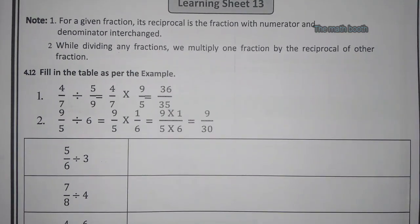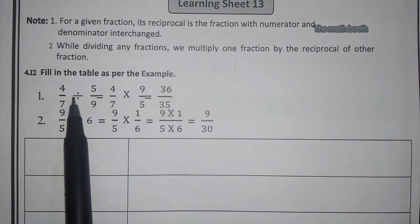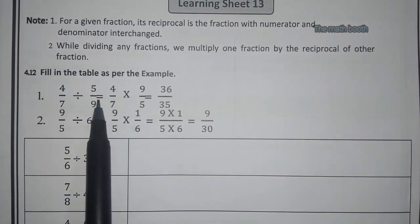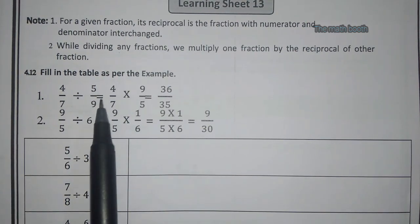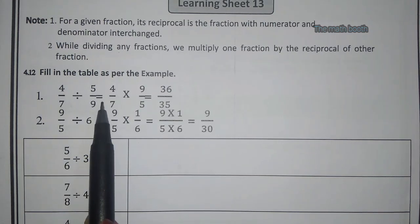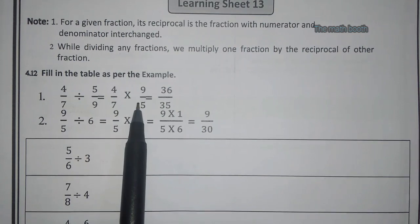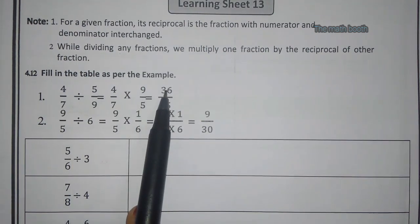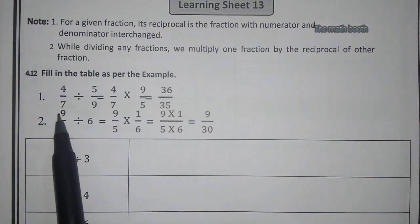Here they have given 4/7 divided by 5/9. To convert division to multiplication, we have to reciprocal one of the fractions. So 5/9 becomes 9/5, and then we do the multiplication process: 4 × 9 = 36 and 7 × 5 = 35, so the answer is 36/35.